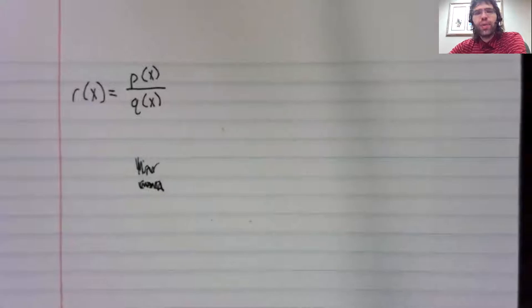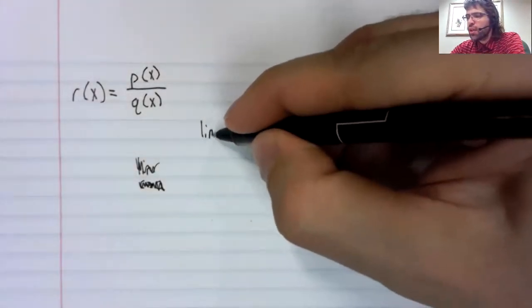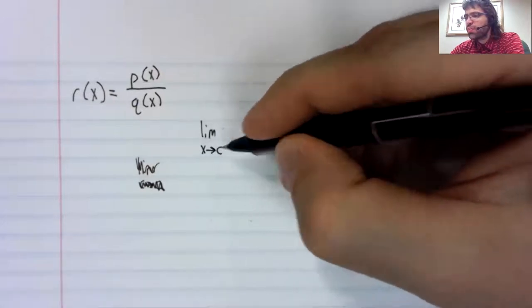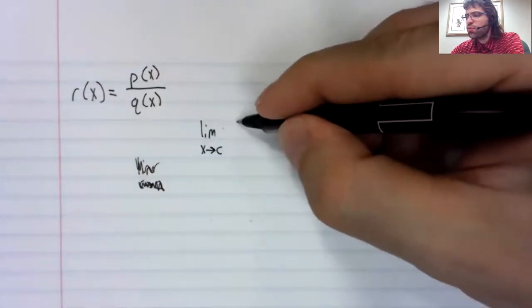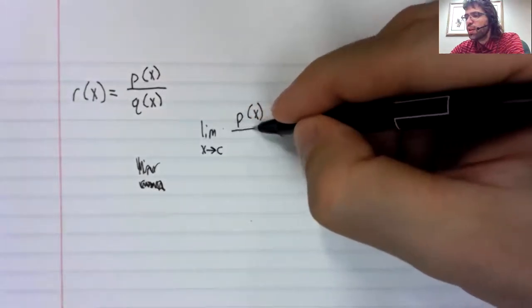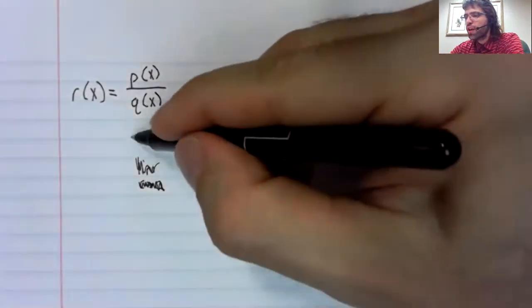Let's handle that case. So, we have a rational function, and we want to take the limit as x approaches c of this rational function.